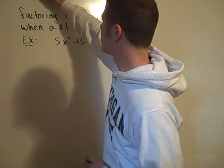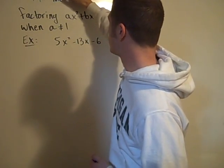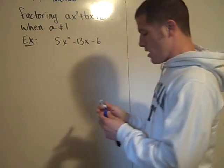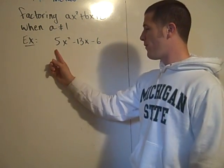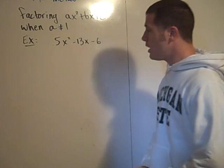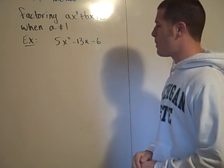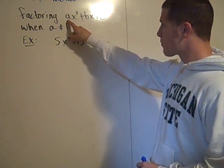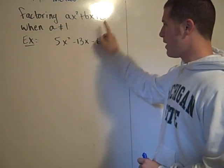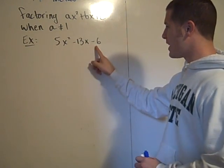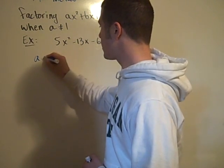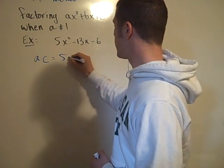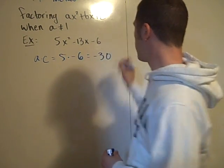So this is the AC method. Okay, so here's an example. I have 5x² - 13x - 6 and we're asked to factor this thing. Okay, so this is called the AC method because we take the a value and we multiply that by the c value. So we take 5 times negative 6. So we take a times c which is 5 times negative 6, which is negative 30.